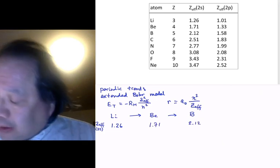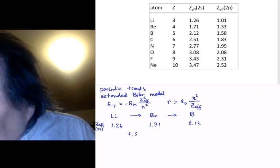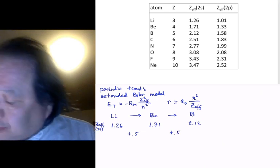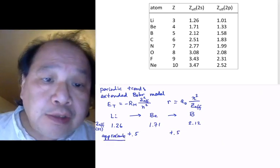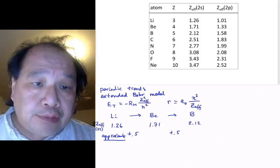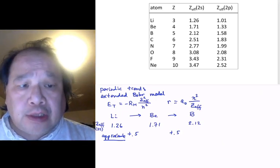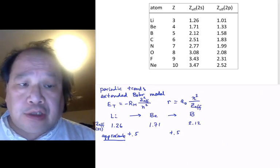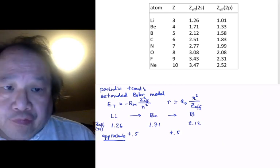Approximately the shift is that it increases by around plus 0.5. The approximate change in Z-effective of 2S is a 0.5 increase as we go to each sequential element in the second shell. Since our goal here is just to get an approximate answer, we're not going to have to look at the D-function. We can just look at the shell picture itself.